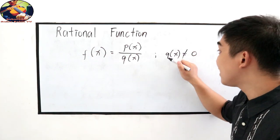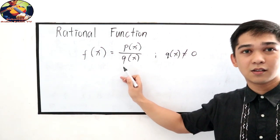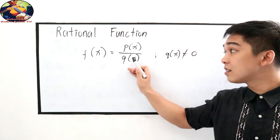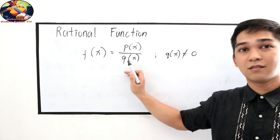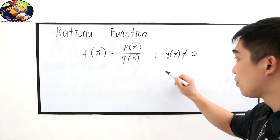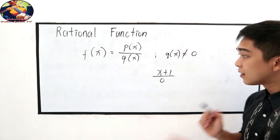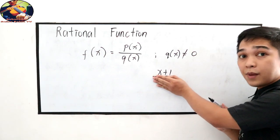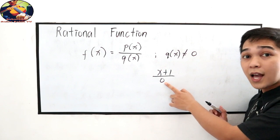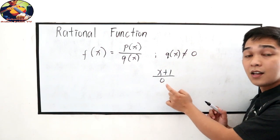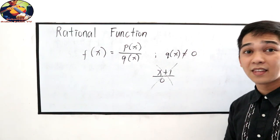and q of x must not be equal to 0. Bakit hindi pwede maging equal kay 0 si q of x? Kasi pag magkakawal tayo ng 0 denominator, magiging undefined na siya. Let's say we have x plus 1 over 0. Yung numerator natin, walang problema. Polynomial siya. Pero sa ating denominator, 0 siya. Alam natin na bawal tayo magdivide ng 0, so hindi na siya ngayon nagiging pasok sa ating condition.